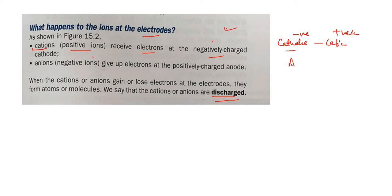At the anode, which is positive and has fewer electrons, anions go and lose their electrons, becoming atoms or molecules. This process where an ion becomes an atom or molecule is called discharge. For example, when chloride ion loses its electron and becomes chlorine gas, it is said to be discharged.